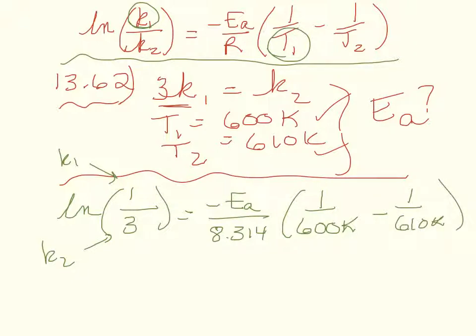So let's do some simplifying. The natural log of 1 third is minus 1.099 and 1 over 600 is 0.001667. I'm going to carry too many sig figs for now until the end. And 1 over 610. And simplifying further then, minus 1.099 equals. I might have forgotten the minus sign on the last page. And when we combine those two inverse temperature terms, we get a very small number.